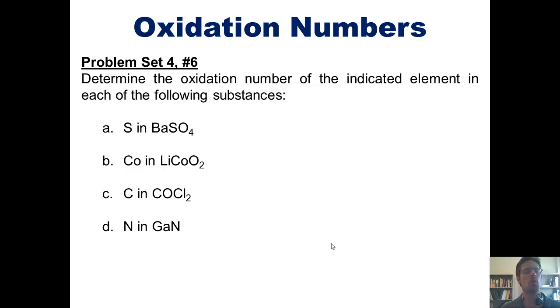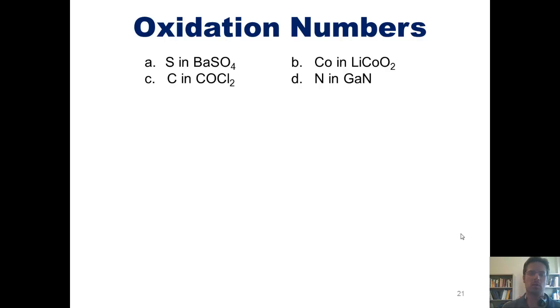Which brings us to a wonderful problem. Determine the oxidation number of the indicated element in each of the following substances. As I've done in the past, I won't do every single one of these examples for you, but we'll do a few to let you see how it's done.